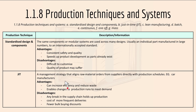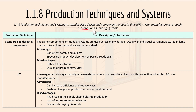Lastly, we have 1.1.8 production techniques and systems, which includes standardized design and components, JIT or just-in-time, lean manufacturing, batch, continuous, one-off, and mass production.